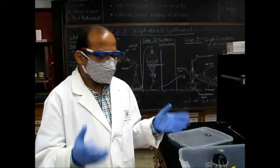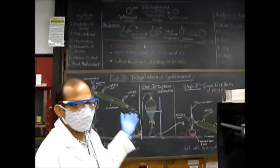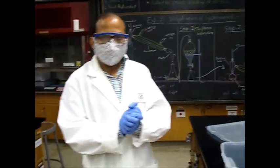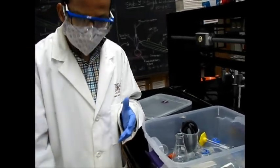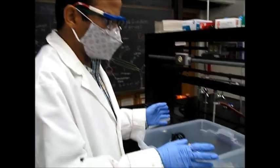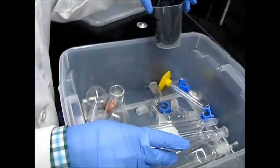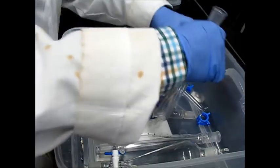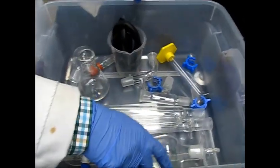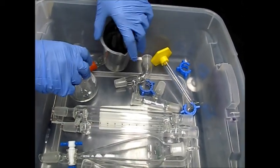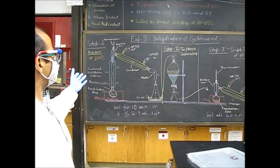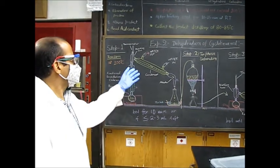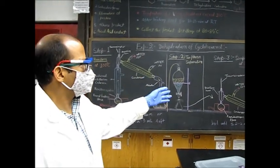Before we start this lab — dehydration of cyclohexanol — we need all our protective equipment: gloves, goggles, mask, toe-covered shoes, and lab coat. Here is our bin with many glasswares. This is the Hempel column for fractional distillation, this is the condenser, separatory funnel, and round-bottom flask. This bin has all the glassware for the three different techniques: fractional distillation, two-phase separation, and simple distillation.